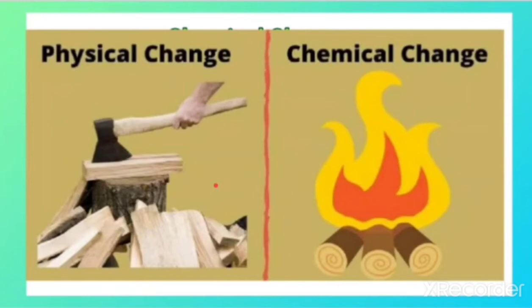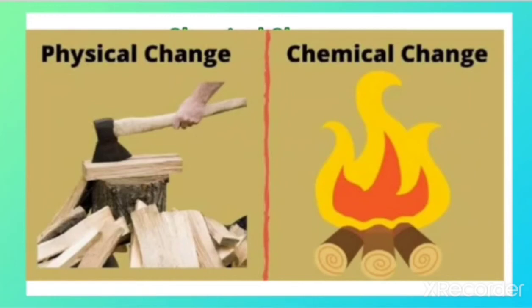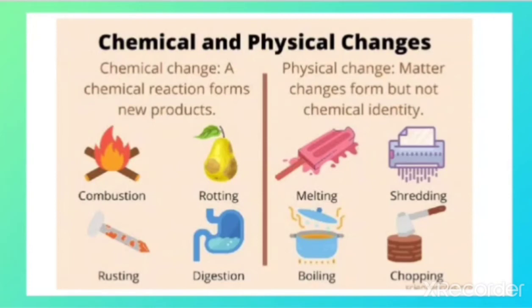When we take the example of wood: cutting wood is a physical change because no new substance is formed. But the burning of wood is a chemical change. This explains the difference between a physical change and a chemical change very well — in burning, a new substance is formed, whereas in cutting, no new substance is formed.